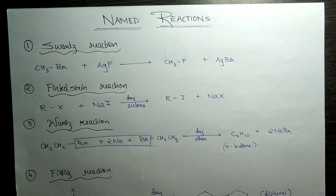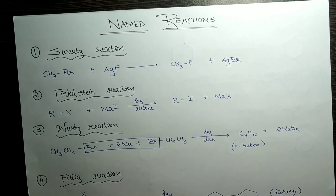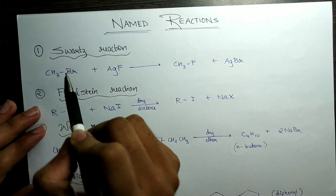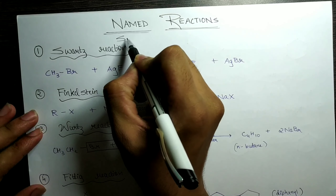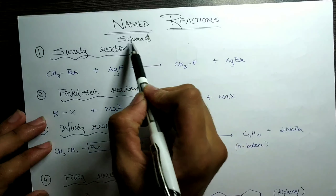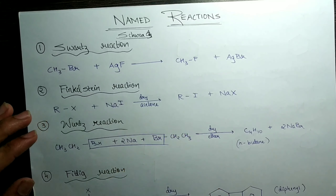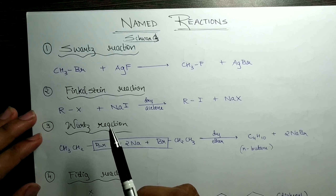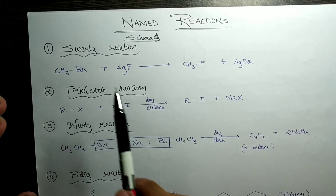I think totally there are 20 named reactions, starting from haloalkanes and haloarenes up till the amines chapter, that is nitrogen compounds. I counted finally and there are exactly 20 named reactions from haloalkanes and haloarenes until the nitrogen-containing compounds. I have picked each and every named reaction, and I have not picked reactions such as diazotization or carbylamine reactions because these are pretty common reactions and not named reactions.